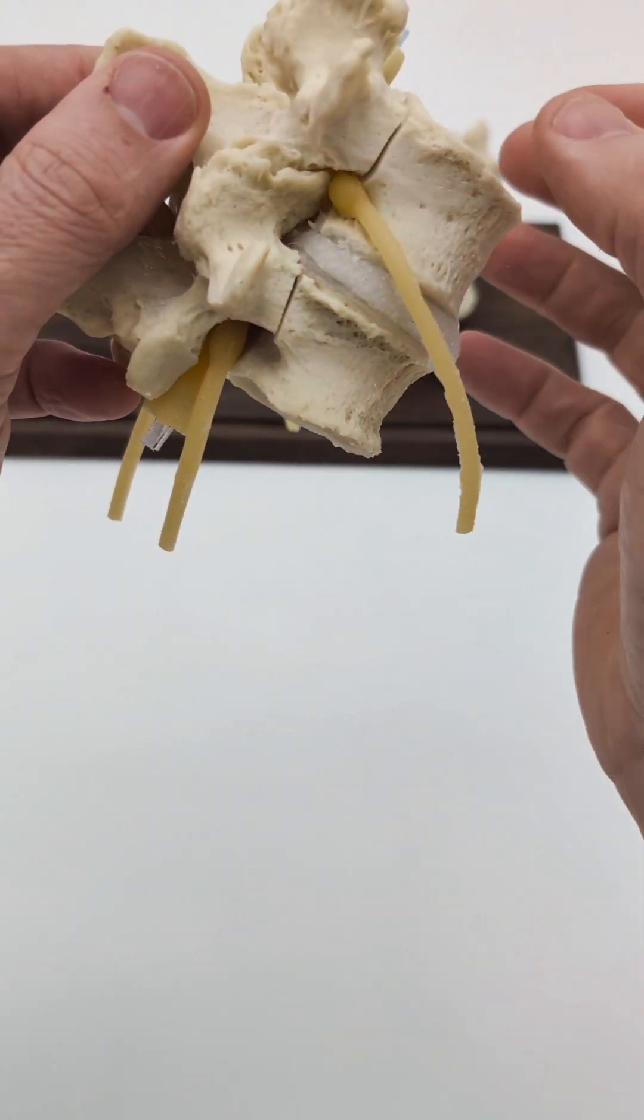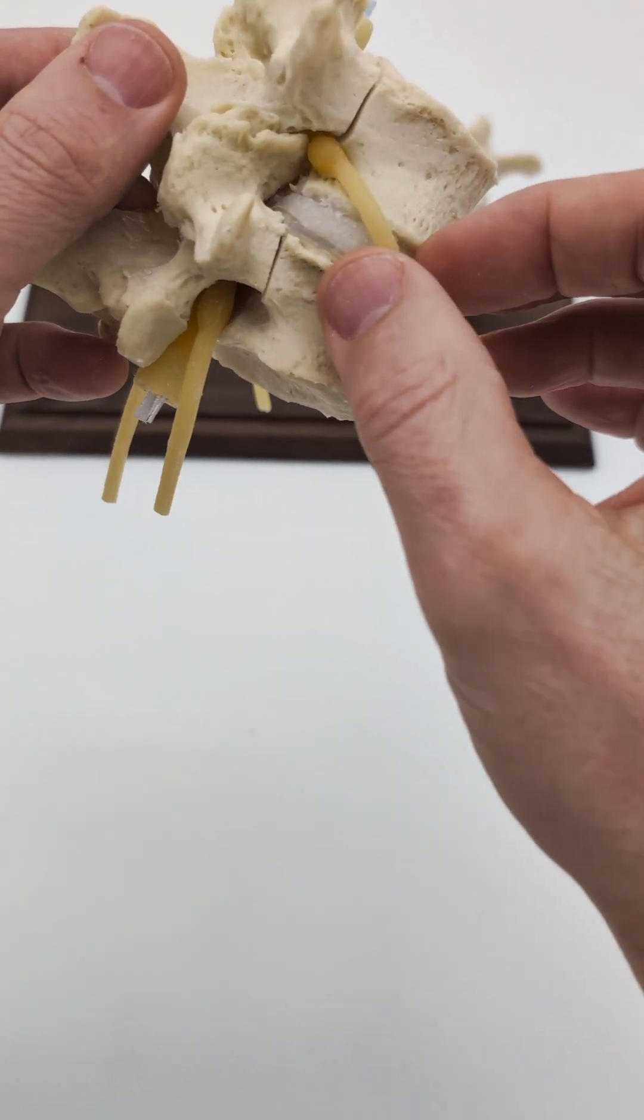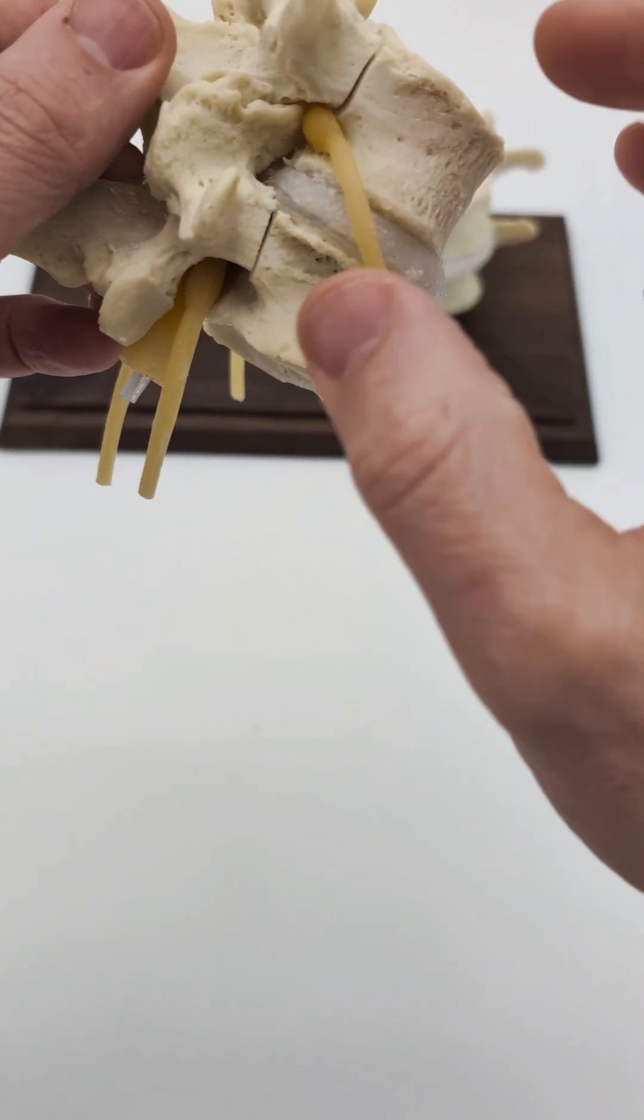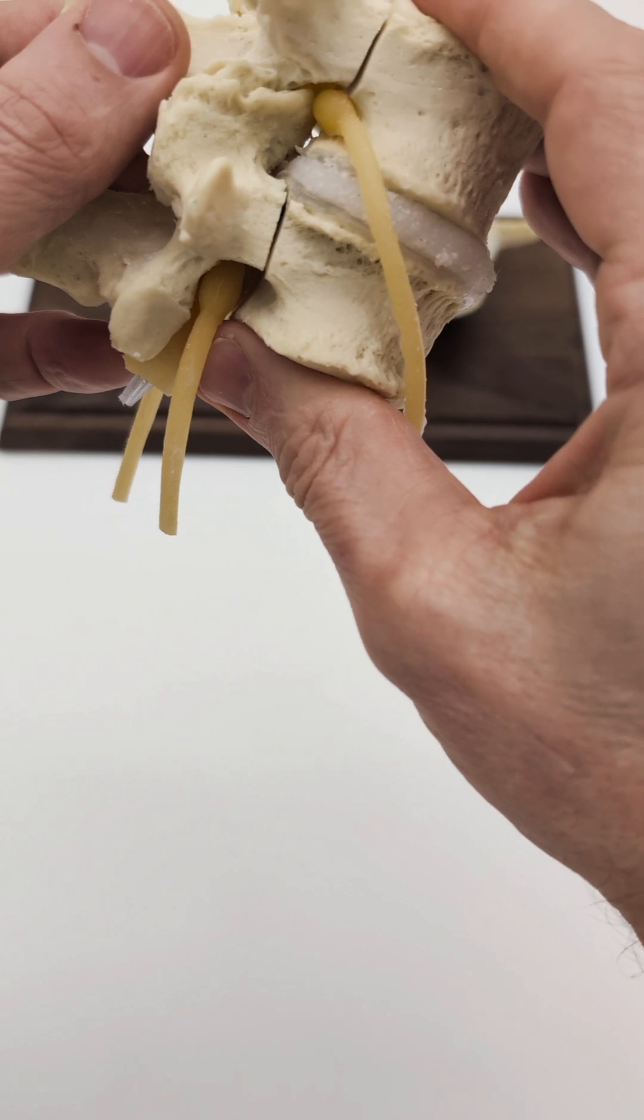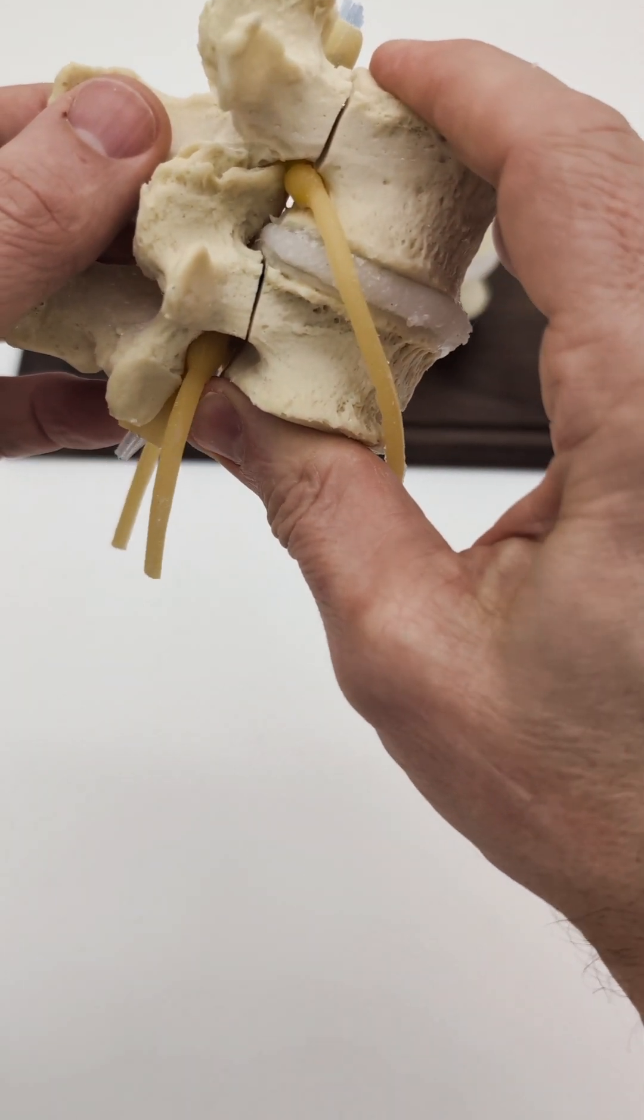So in this case, you can see that this L4 nerve root, this is the L4-5 motion segment, with the dynamic disc bulge.